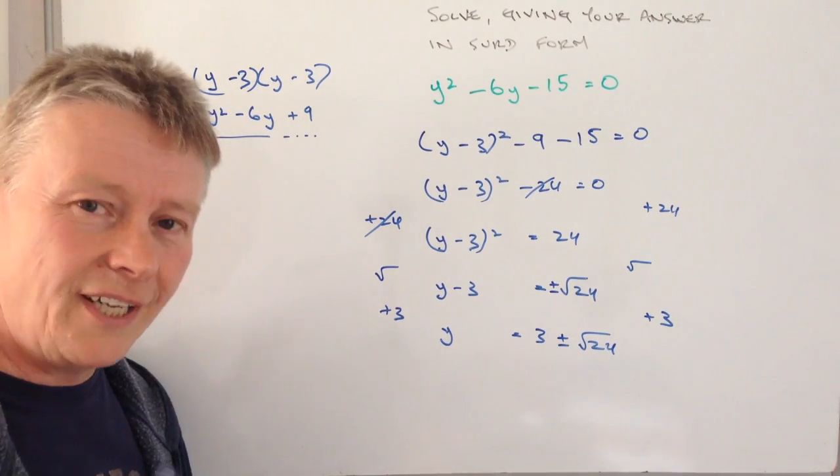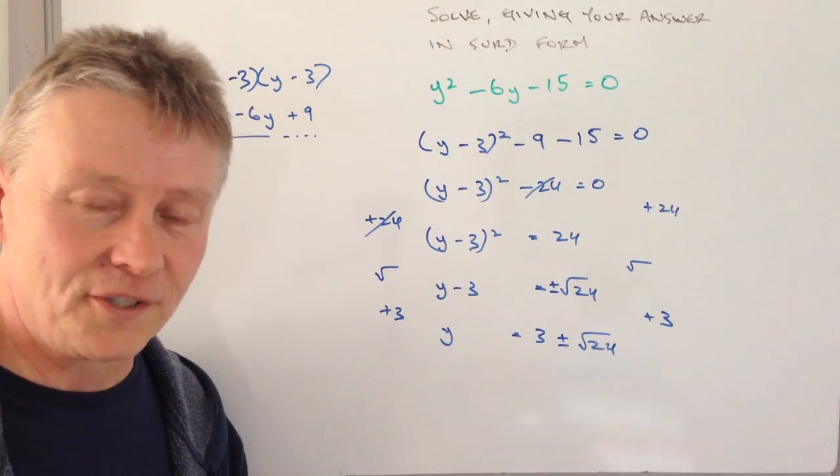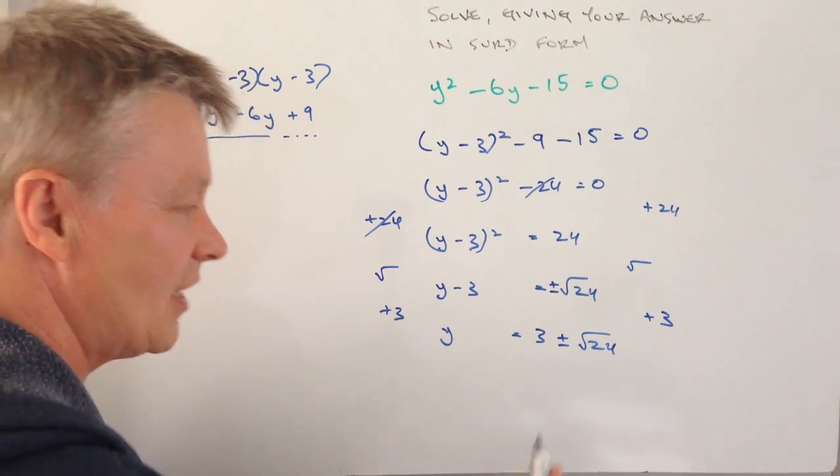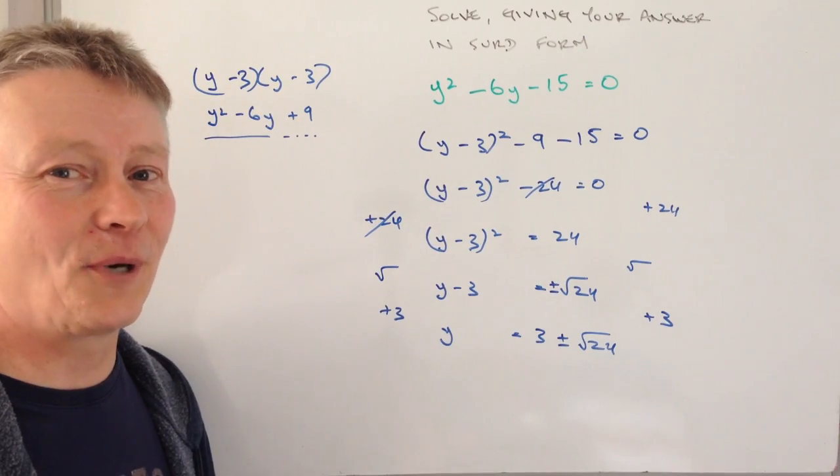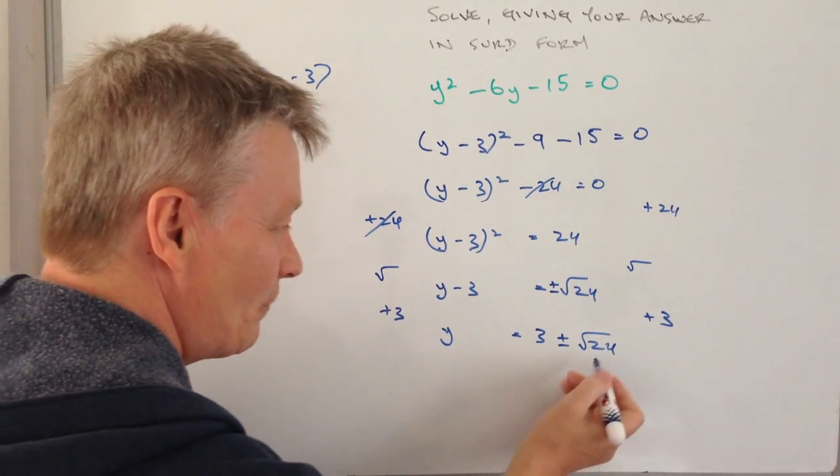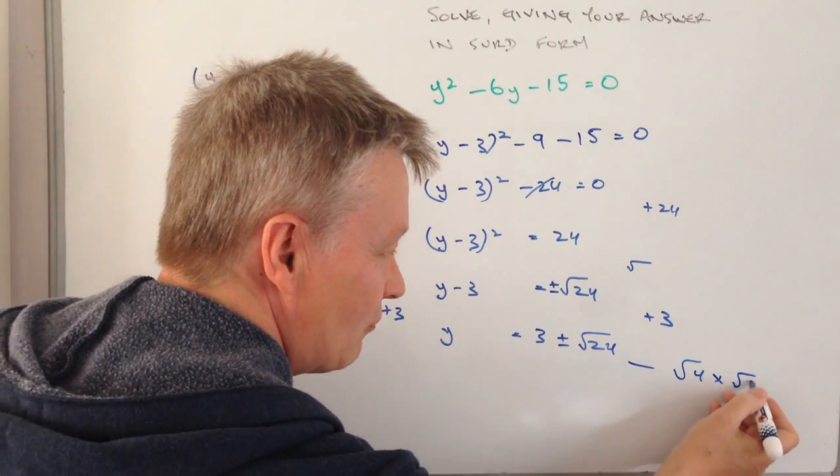The only thing that you might be aware of, and particularly if you're going to go for grade 9, or as it might be in the future grade 10, but if you're going to go for a high level result, you need to remember that we can simplify root 24 a little bit by saying that root 24 is exactly the same as saying root 4 times root 6.